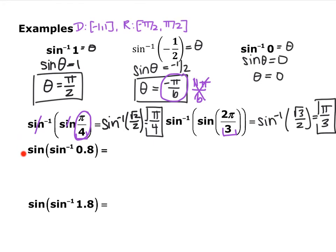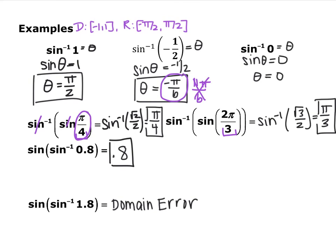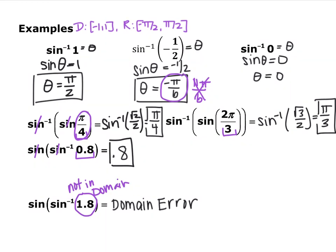Going the opposite direction, plug these into your calculator. Sine inverse on a calculator is second sine. Make sure your calculator is in radian mode. For sine inverse of 0.8, you should end up with 0.8. For the second one, you get a domain error — because of the restricted domain of inverse sine, values must be between negative one and one. One point eight is not in the domain of sine inverse, so it's not possible.